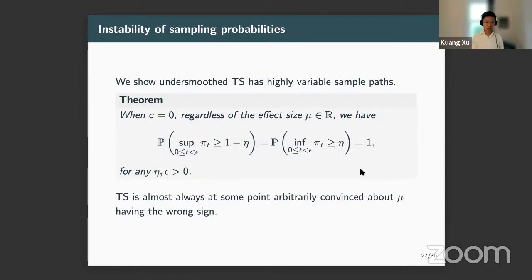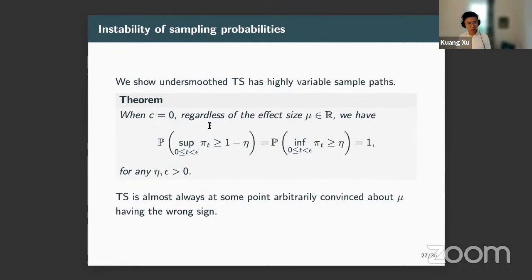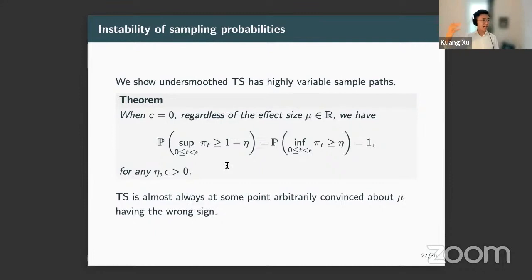The theory says: under-smooth Thompson sampling, despite having nice mean regret performance, has a highly variable sample path. When C = 0, regardless of the effect size μ, the sampling probability π_t near zero will be arbitrarily convinced that the wrong assumption is true with arbitrary confidence. Thompson sampling is almost always at some point arbitrarily convinced about μ having the wrong sign — this can be shown theoretically through the diffusion analysis.